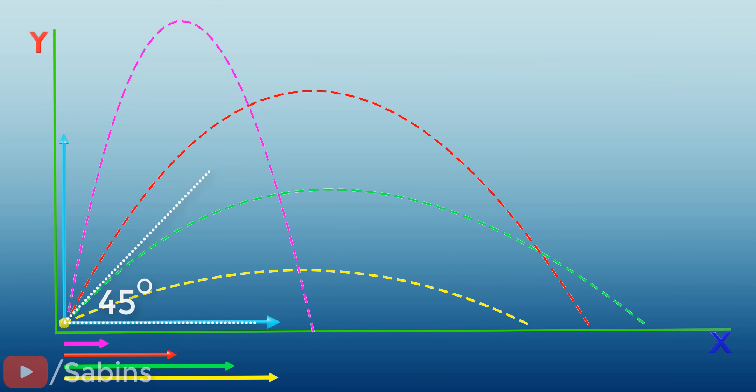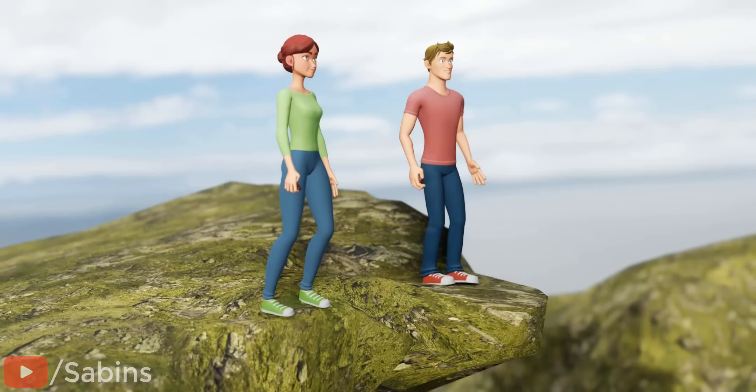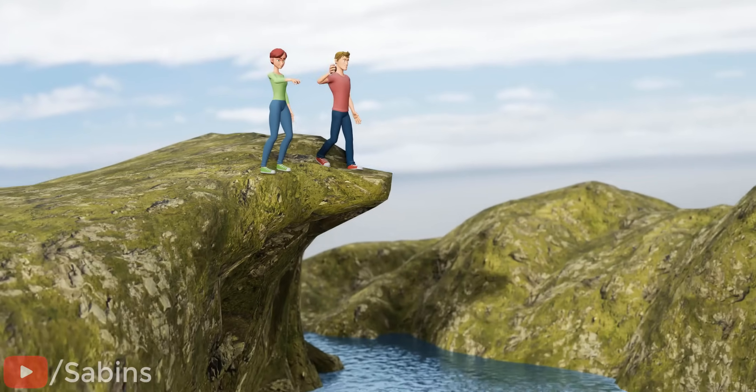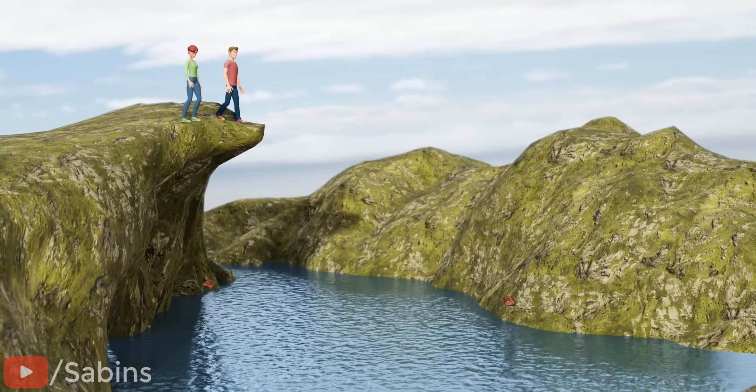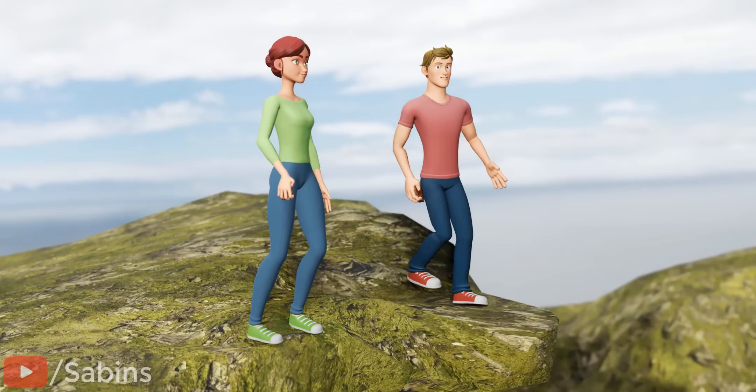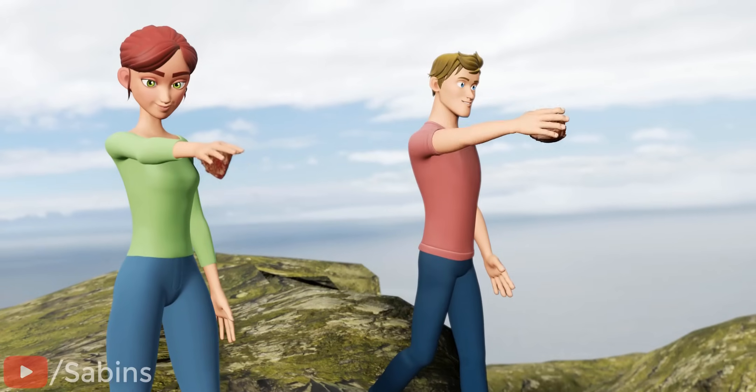With this understanding of projectile motion, it becomes quite easy to solve the question we posed at the beginning of the video. The time it takes for the stone to hit the ground depends only on its vertical velocity. Even if you have given a high horizontal velocity to your stone, its vertical component is zero.